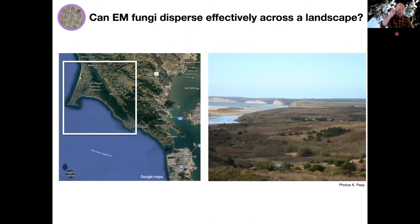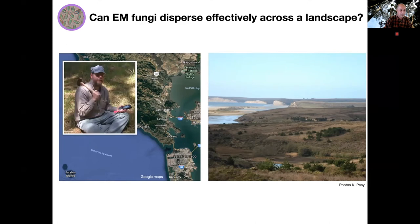I want to start by talking about dispersal. This image shows Point Reyes National Seashore, just north of San Francisco, where I've been doing research and where Suellis pungens occurs. Before going further, I need to acknowledge Tom Bruns, who is here, for introducing me to this system as a doctoral student. His work here has made much of my work possible.